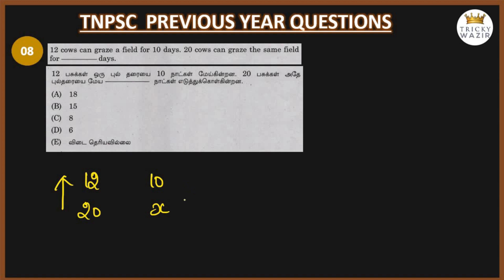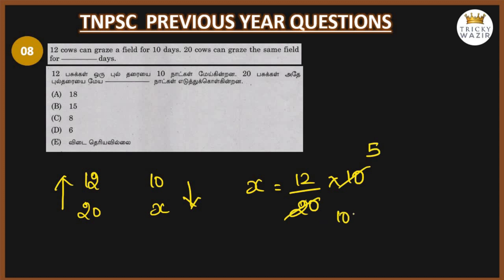As the count increases, the number of days decreases — this is inverse proportion. X equals 12 divided by 20 into 10. Cancelling common factors: 5 times 2, then further simplification gives 6 days. So the answer is 6 days, which is correct.